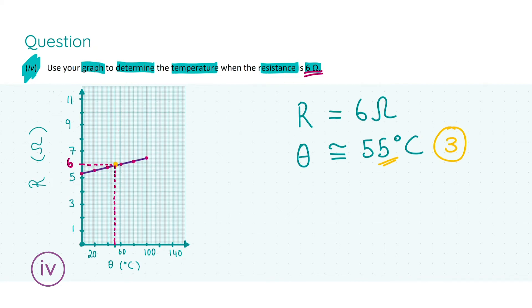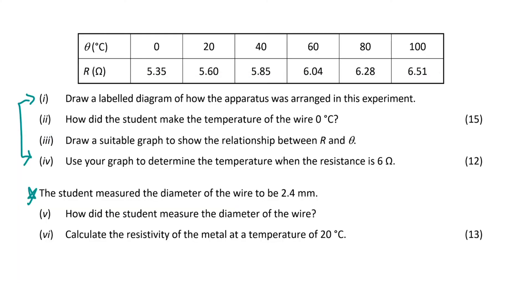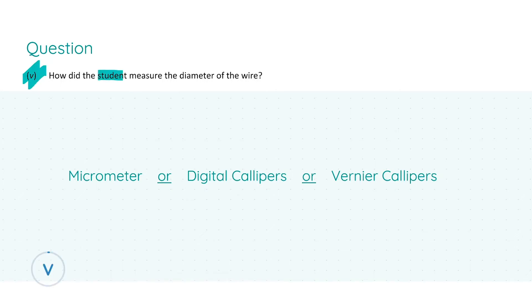Now back to our original question for the final section. We are told that the diameter of the wire is 2.4 millimeters. In part five, we're asked how did the student measure the diameter of the wire? You can answer this in three ways: using a micrometer, digital calipers, or vernier calipers. Any of these options will get you four marks. However, I'd put down all of them if you know them. On the basis of these temperamental marking schemes, you don't know whether they're going to be really picky, so put down everything you know. Never settle for just the bare minimum. Always push it—we want to maximize our marks.